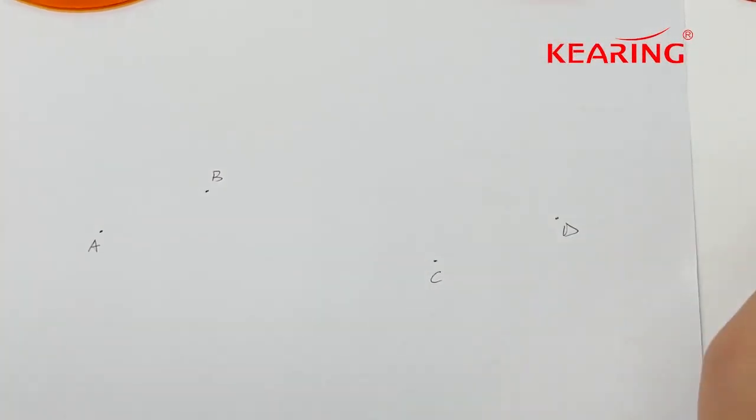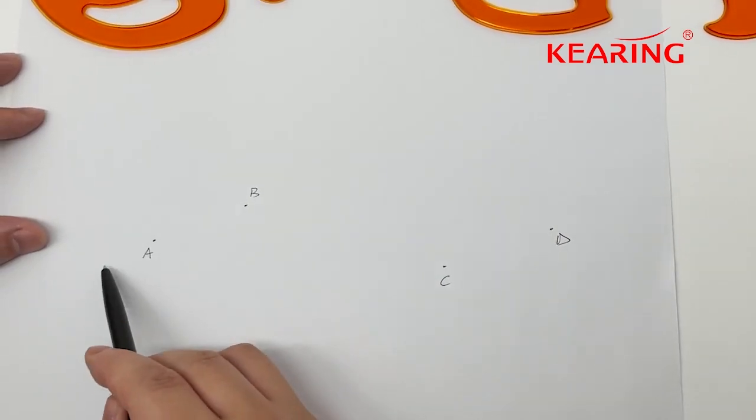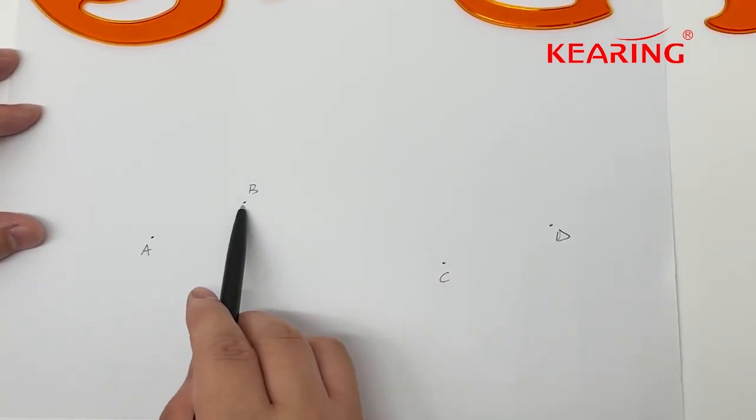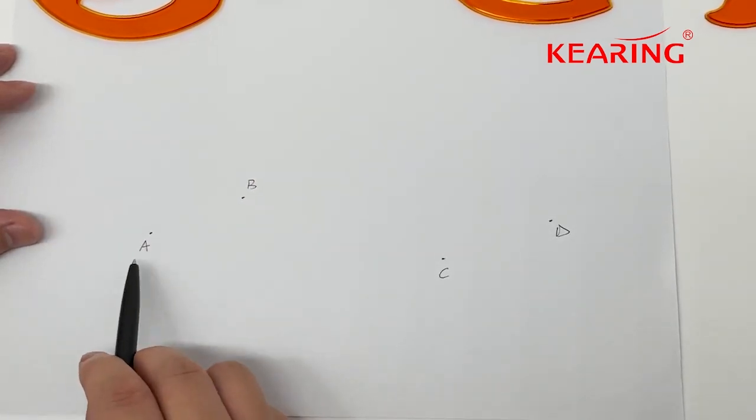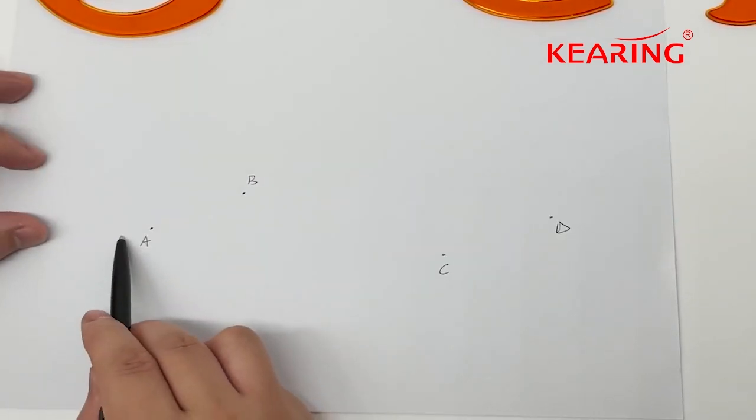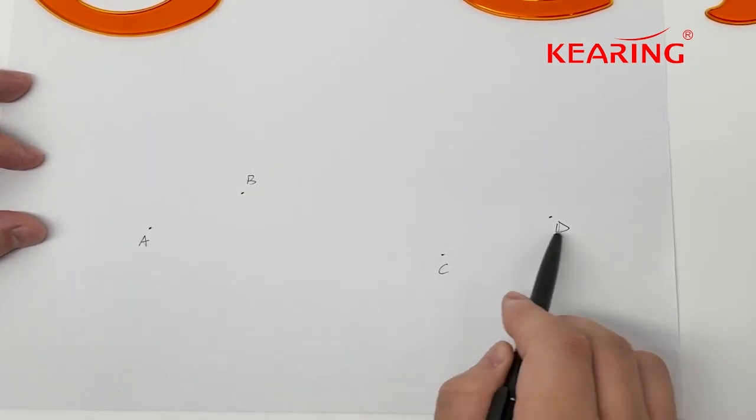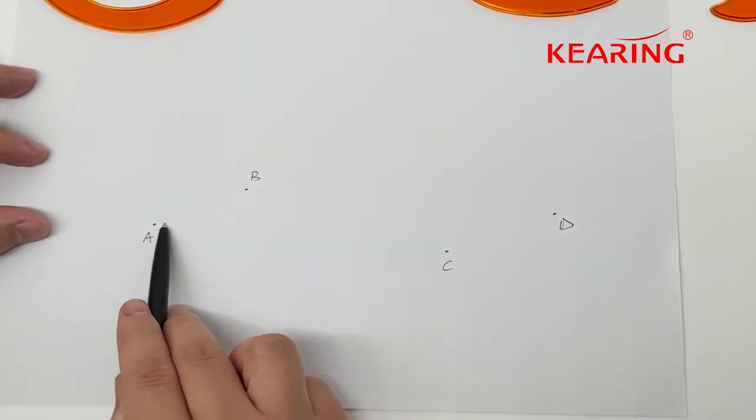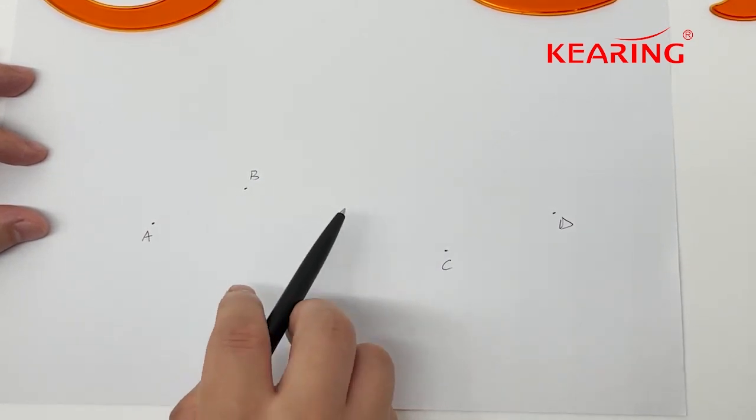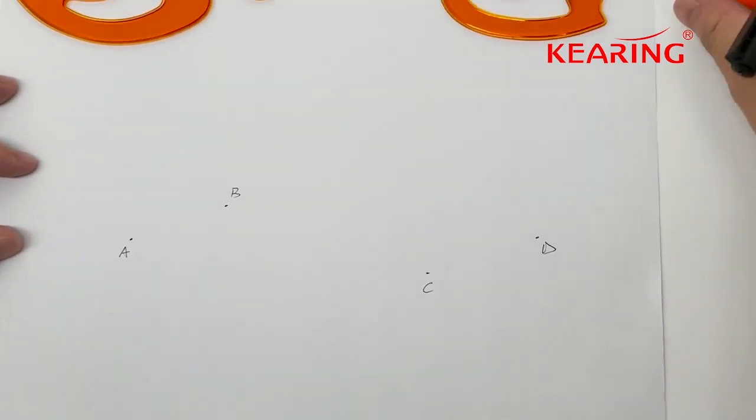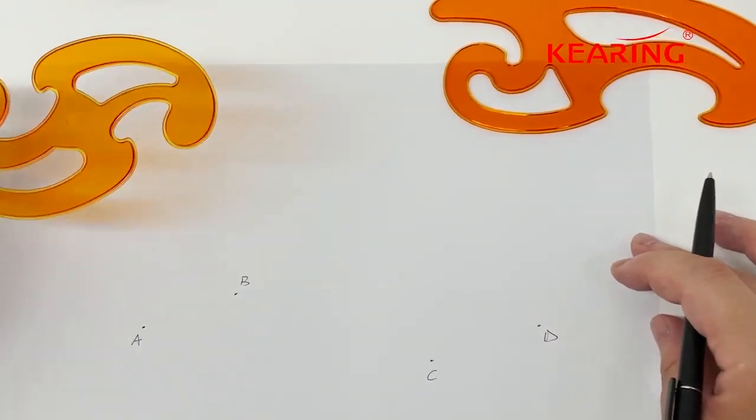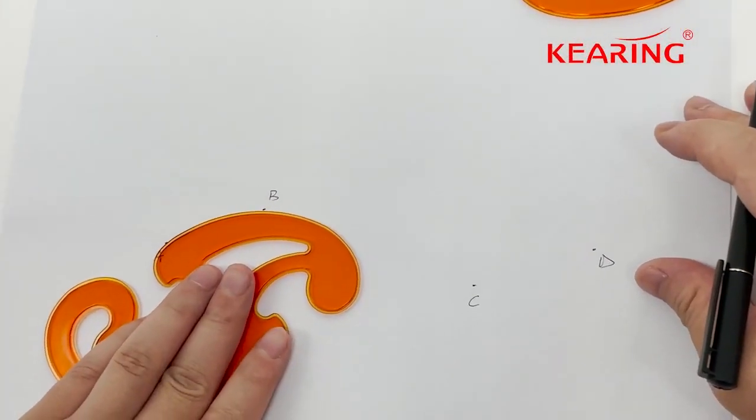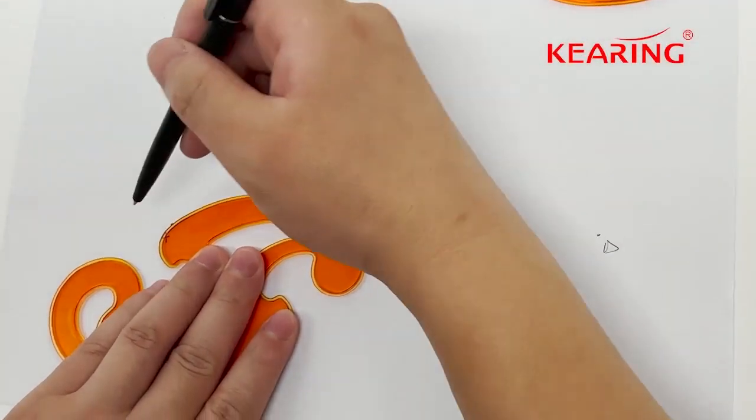To connect these four points with a curve line, the easiest way is to draw by hand, but that's not perfect enough. So we can use this French curve and simply place it here.